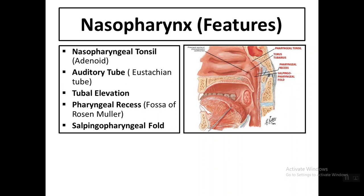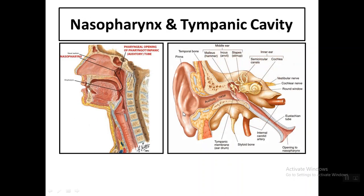To summarize, the features found in the nasopharynx are: the nasopharyngeal or pharyngeal tonsil (adenoid), the auditory tube with the tubal elevation, the pharyngeal recess (fossa of Rosenmüller), and the salpingopharyngeal fold formed by the salpingopharyngeus muscle.